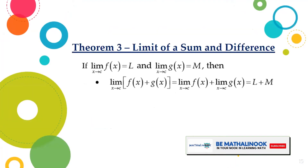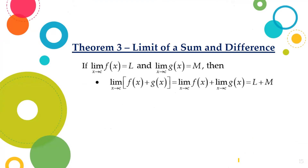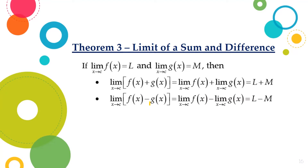Theorem number 3, limit of a sum and difference. If the limit of f of x as x approaches c is equal to L and the limit of g of x as x approaches c is equal to M, then the limit of f of x plus g of x as x approaches c will be equal to the limit of f of x as x approaches c plus the limit of g of x as x approaches c, which equals L plus M. For the difference, the limit of f of x minus g of x as x approaches c will be equal to L minus M.